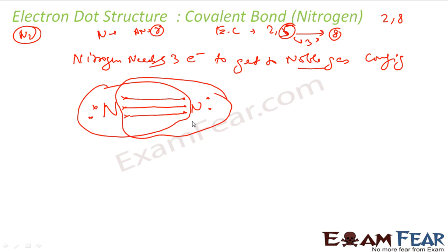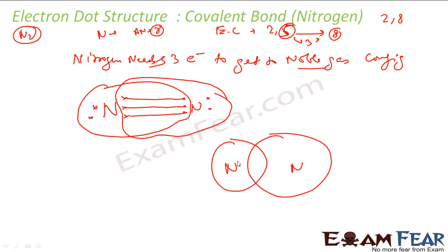In the common pool there are three electrons from one nitrogen and three electrons from the other. Each nitrogen keeps two electrons to itself and contributes three to the shared pool. Looking at the overall count, each nitrogen has eight electrons: five of its own and three from the common pool. That is how we write the electron dot structure for N₂.